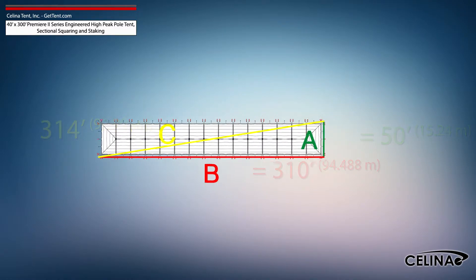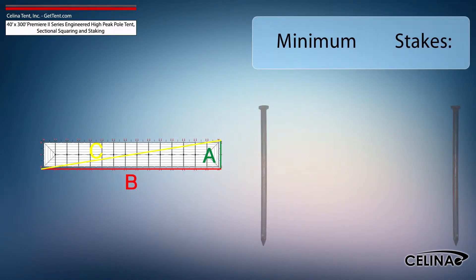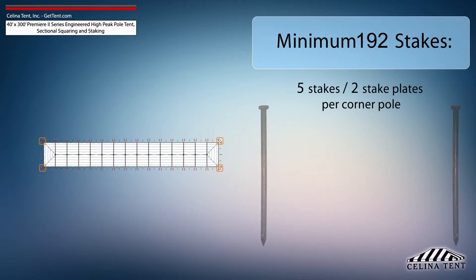Celina recommends that a 40-foot by 300-foot Premier 2 Series High Peak Pole Tent receives a minimum of 192 stakes: 5 stakes and 2 stake plates for each corner pole, 1 stake for each side pole.